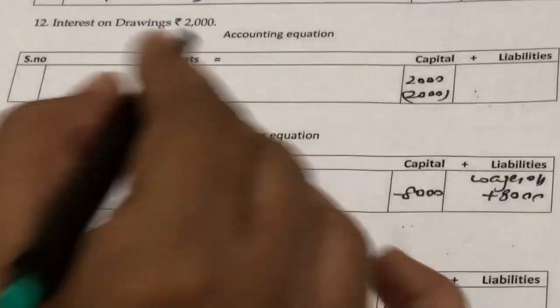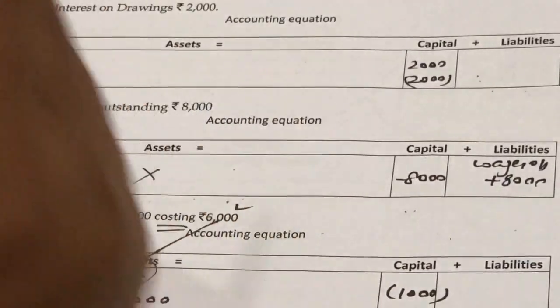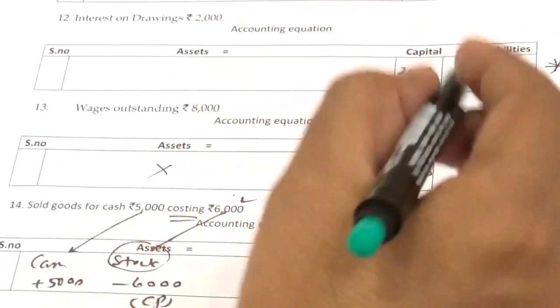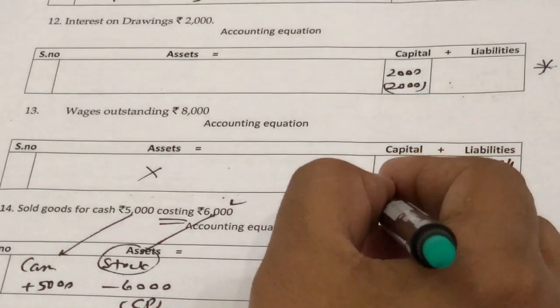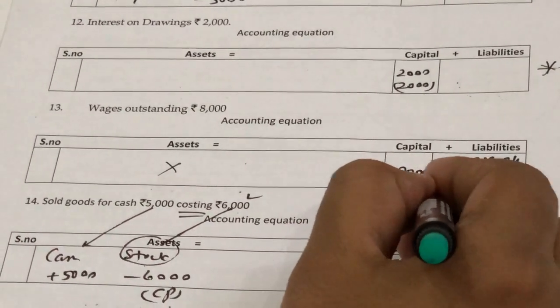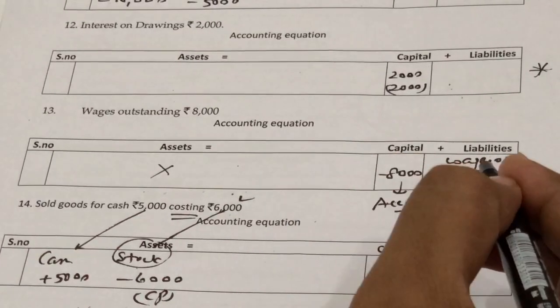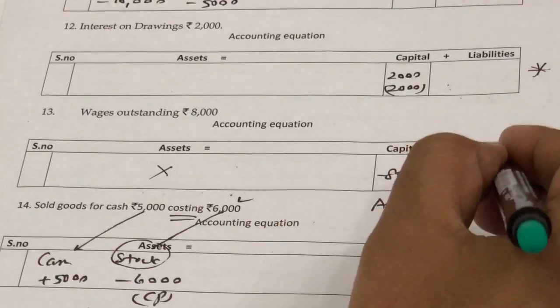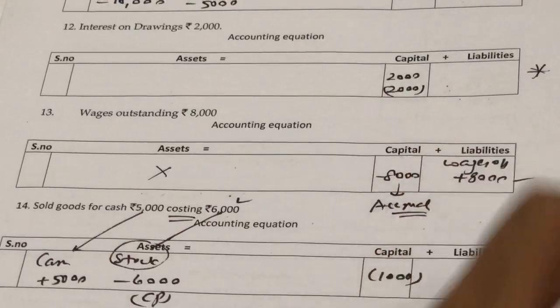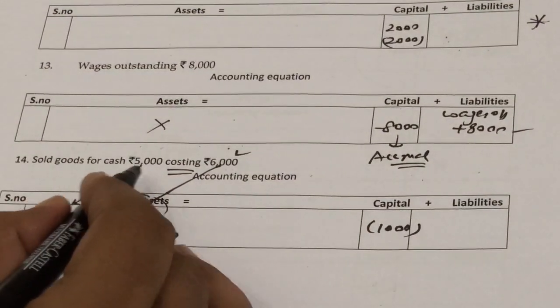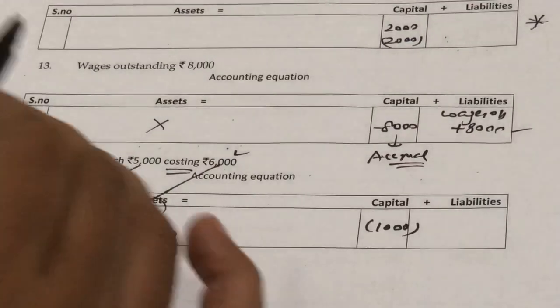Next transaction: wages outstanding. Outstanding means the expense is due but not yet paid, so nothing is done on the asset side. We subtract from capital because we have received the services, and as per the accrual concept it is our expense regardless of payment. We also open a new column on the liability side for wages outstanding, as it is a liability.